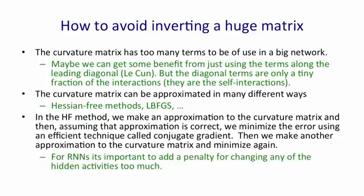It's also important in recurrent neural networks to add a penalty for changing any of the hidden activities too much. That would prevent us, for example, from changing a weight early on that causes huge effects later on in a sequence. We don't want to get effects that are too big and if we look at the changes in the hidden activities, we can prevent that by penalizing those changes. If we put a quadratic penalty on those changes, we can combine that with the rest of the Hessian-free method.